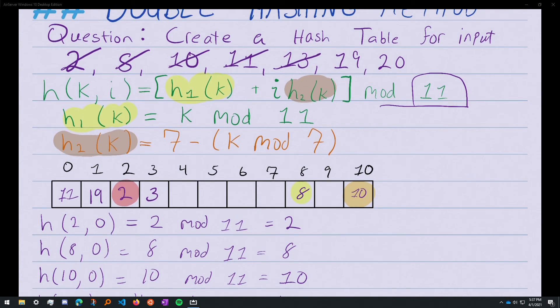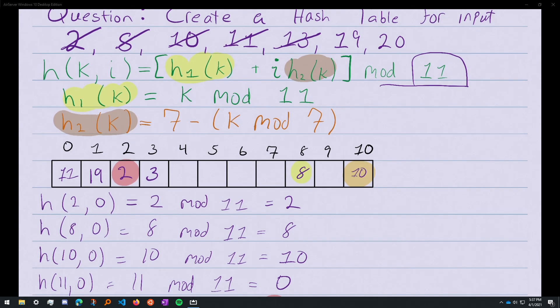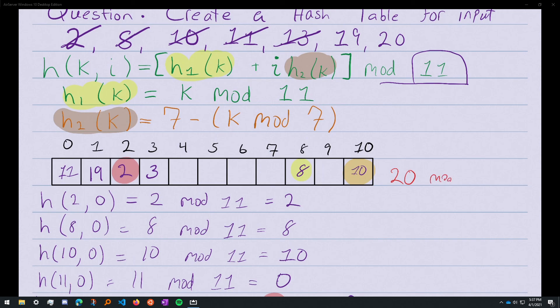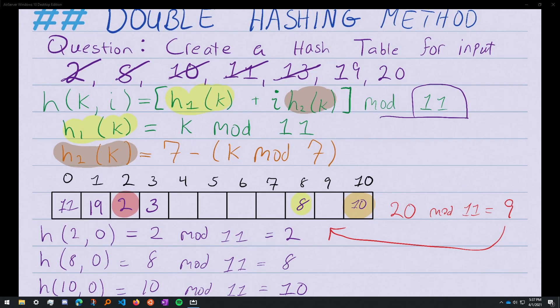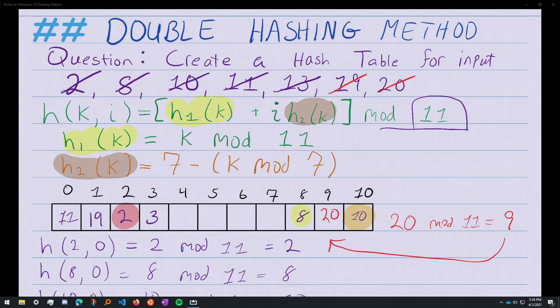Now for 20, we can try it out first. 20 mod 11 equals 9, and we can just go ahead and put that right in. No problem. And we're done creating the hash table using the double hashing method from this given input.